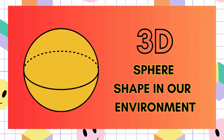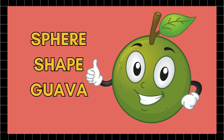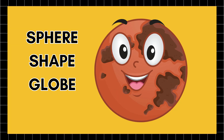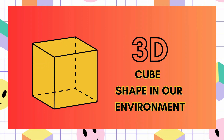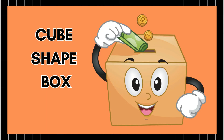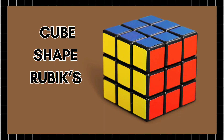3D Sphere Shape. 3D Cube Shape in our environment. Cube Shape: Dice. Cube Shape: Box. Cube Shape: Ice Cube. Cube Shape: Rubik's Cube.